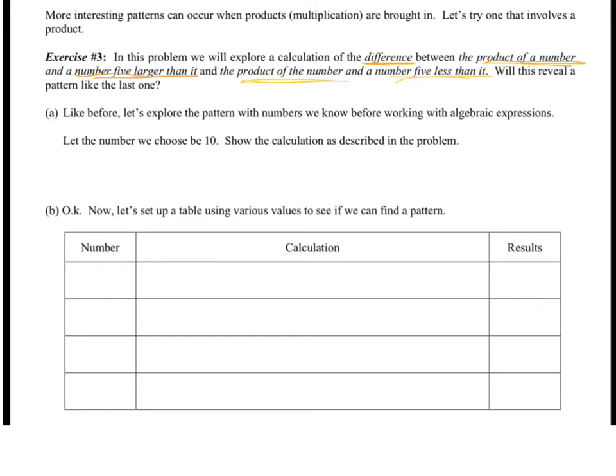So before we write with a variable, we're going to just plug in some numbers. So if we take the product of a number, let's choose the number 10, and a number 5 larger than it. So 5 more than 10 is 15. So we're finding the difference of the product of a number and 5 less than it. So if I pick 10, 5 less than that would be 5. 10 times 15 is 150. 10 times 5 is 50. So my answer becomes 100. So if I plug 10 in, 100 is my result as shown up above.